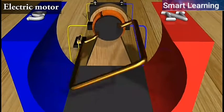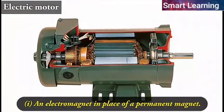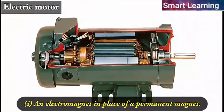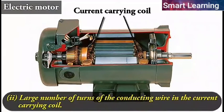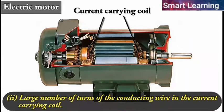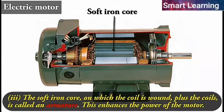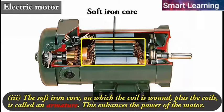Commercial motors use: one, an electromagnet in place of a permanent magnet; two, large number of turns of the conducting wire in the current carrying coil; and three, a soft iron core on which the coil is wound. The coil plus the core is called an armature. This enhances the power of the motor.